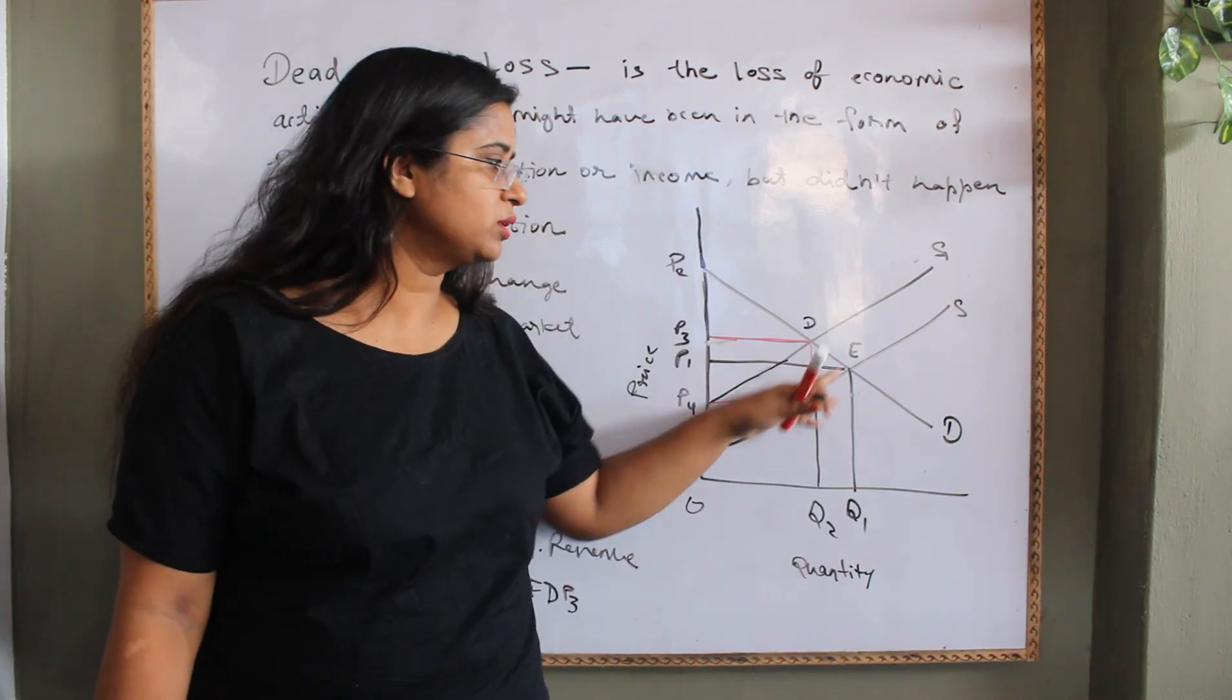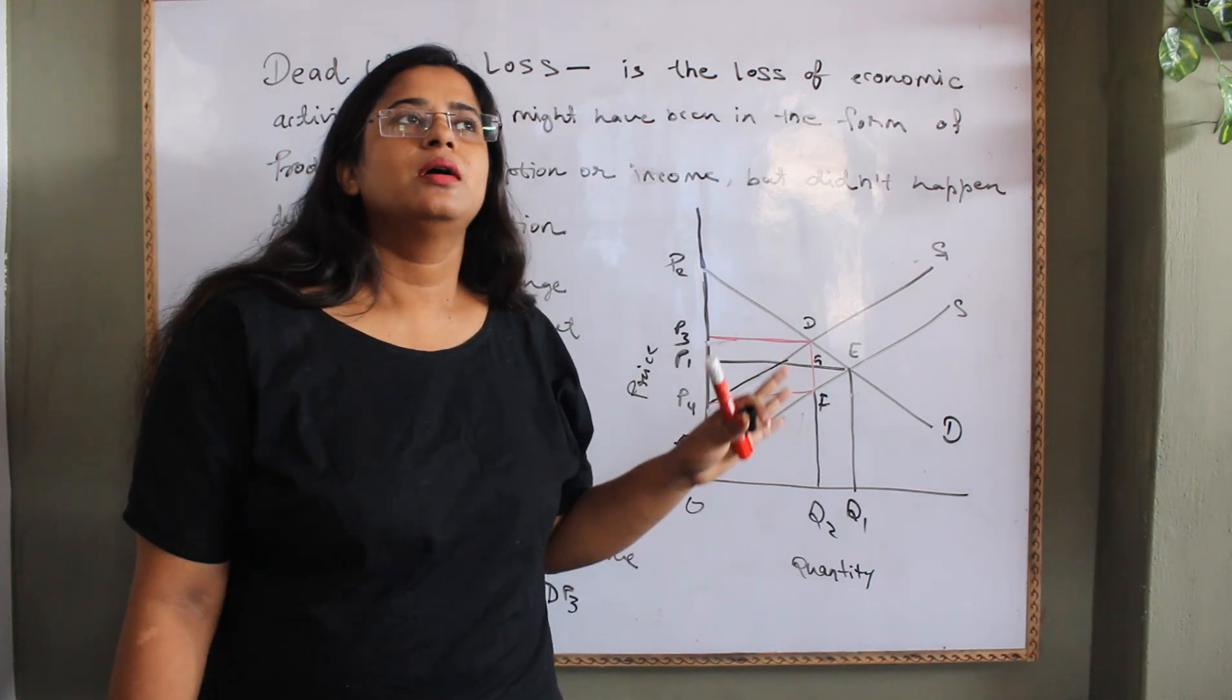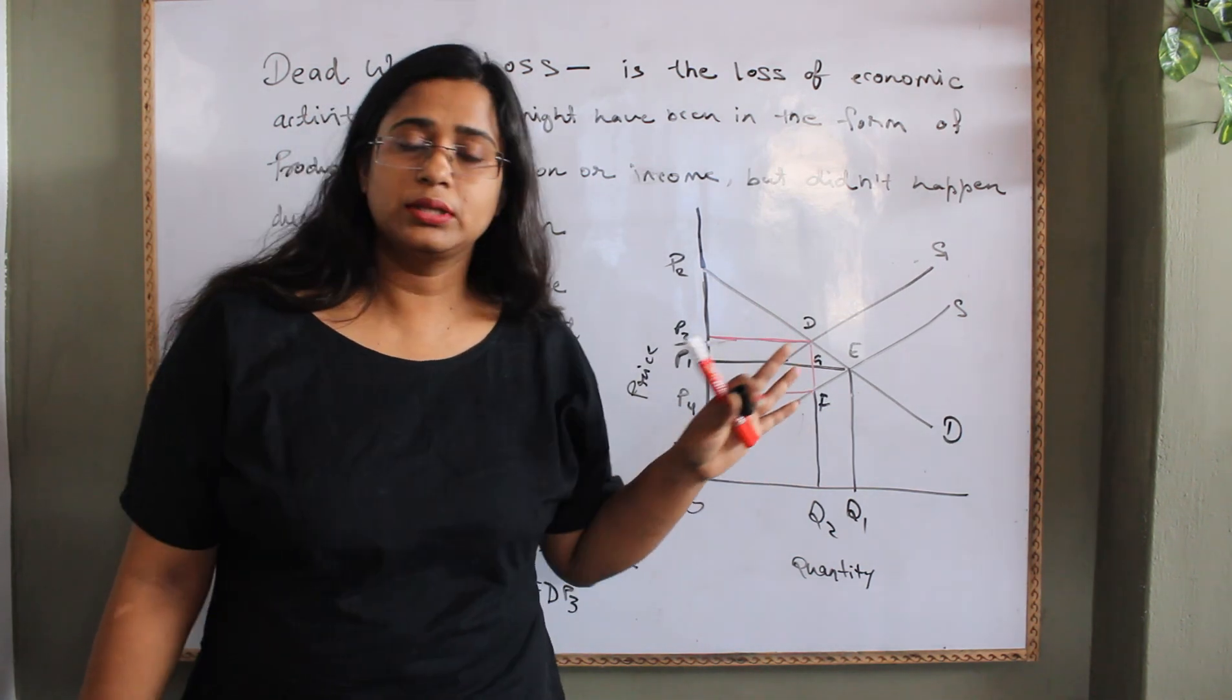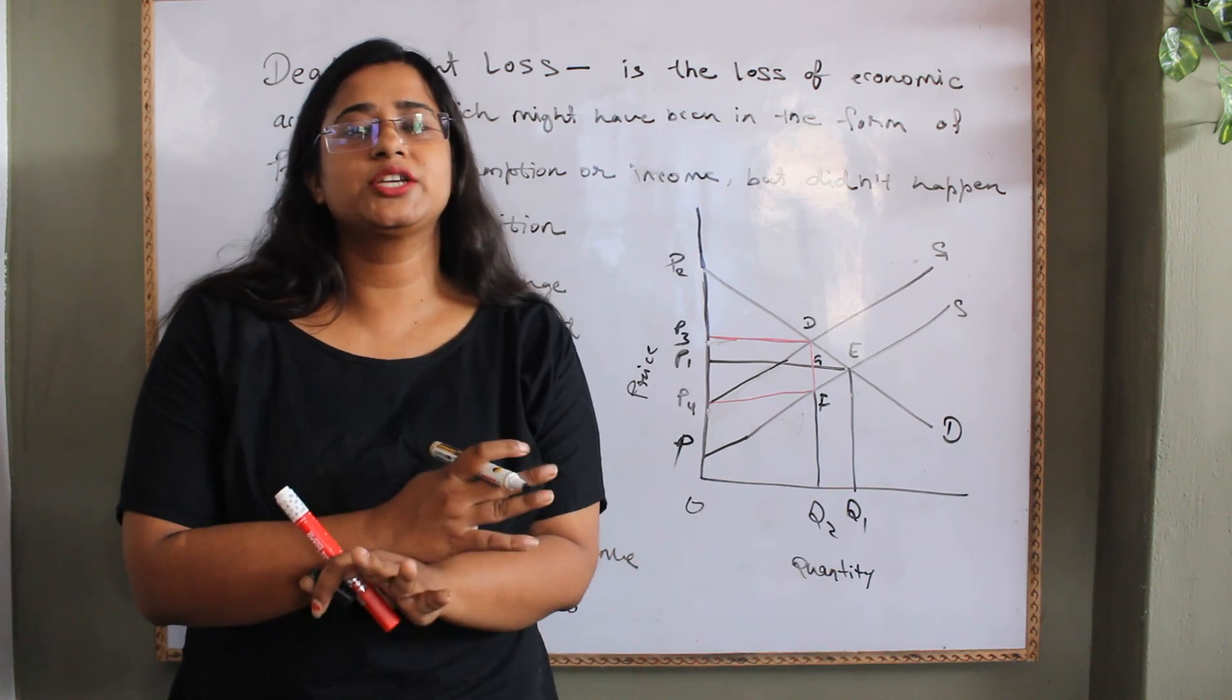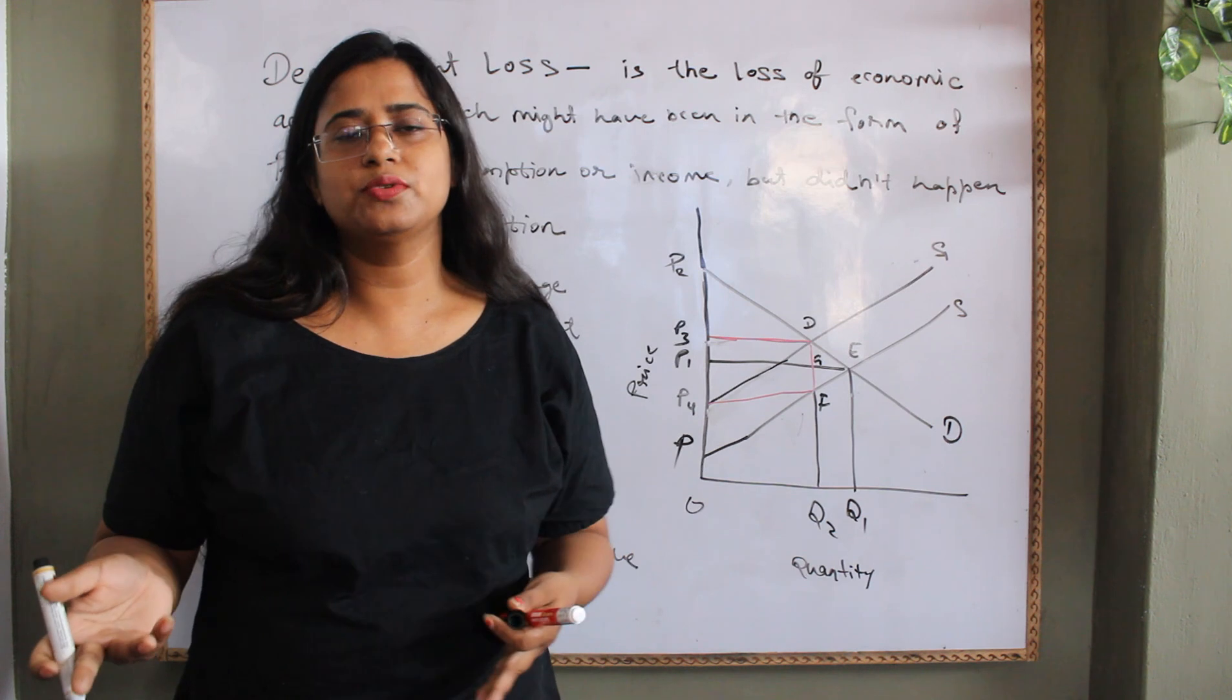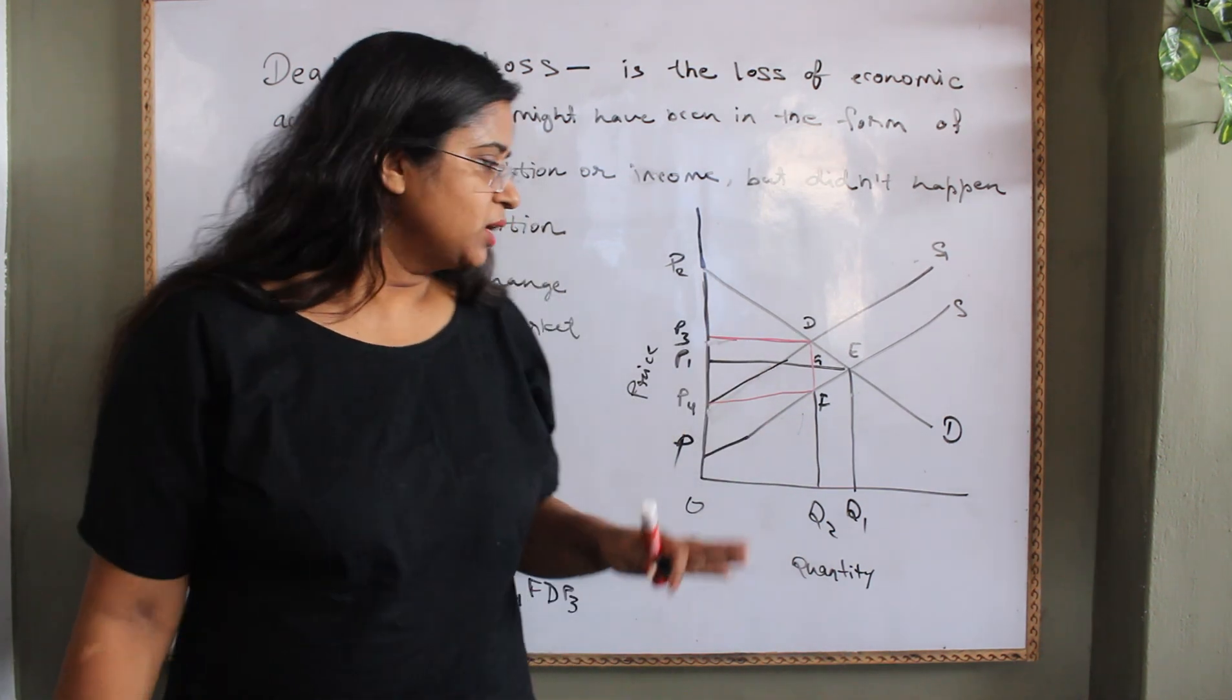Deadweight loss occurs when there is some policy change or adjustment which distorts the original market equilibrium or any coordinates on a two dimensional paper that is not at the equilibrium point or the intersection of the two opposite forces just like here demand and supply.